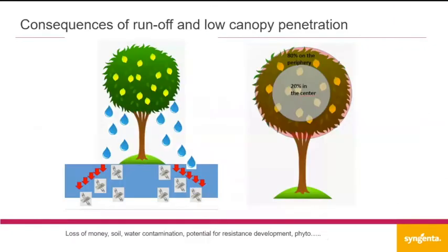This highlights the consequences of runoff and low canopy penetration. When you use a really small droplet, it doesn't have the energy to penetrate the canopy and only covers and wets the outside — the periphery of the crop. This leads to a lot of spray liquid on the outside, which could cause runoff. Runoff is something we don't want because it pollutes the environment, we lose money, we have less efficacy, and when pests or diseases are in the center of the canopy, you just can't reach them.